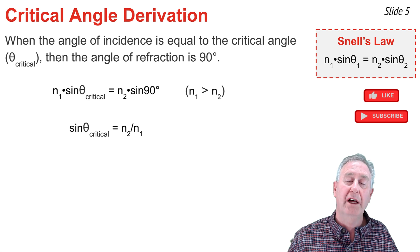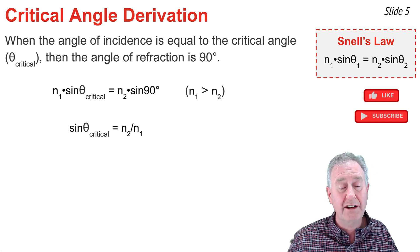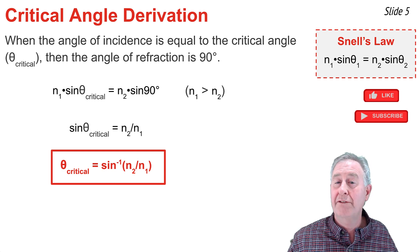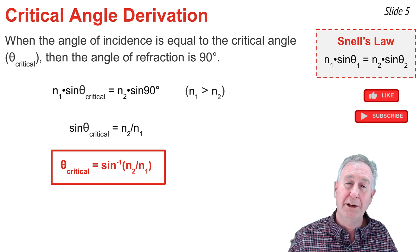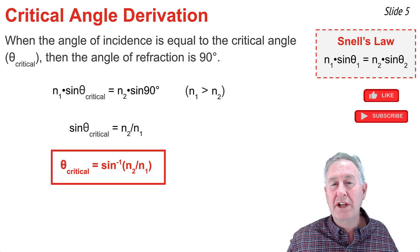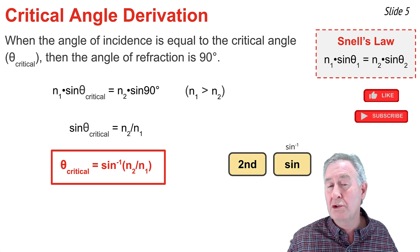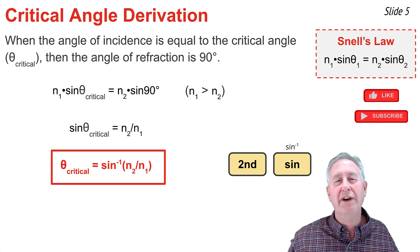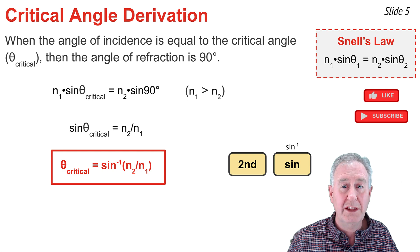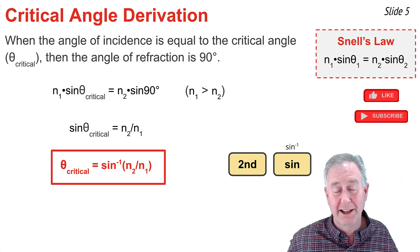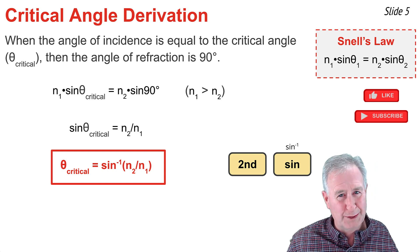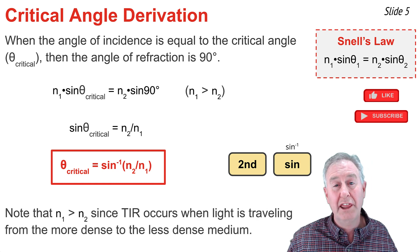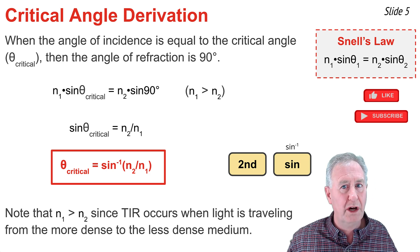To get the critical angle formula, I take the inverse sine of both sides. The equation becomes: the critical angle equals the inverse sine of the ratio N2 divided by N1. On a calculator, the inverse sine is typically found using the second and sine buttons. Find N2 divided by N1, then press second-sine, and you'll get the critical angle. Note that N1 must be greater than N2, and the ratio N2/N1 must be less than 1.